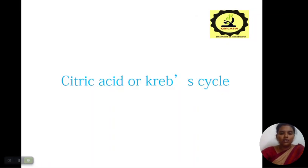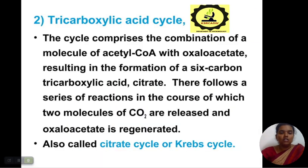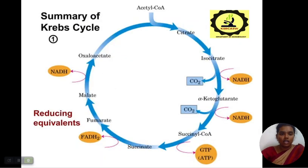Next, we will see about the citric acid or Krebs cycle. This is also called the tricarboxylic acid cycle. The cycle comprises the combination of a molecule of acetyl-CoA with oxaloacetic acid, resulting in the formation of the 6-carbon carboxylic acid citrate. There follows a series of reactions in the course of which 2 molecules of CO2 are released and oxaloacetic acid is regenerated.